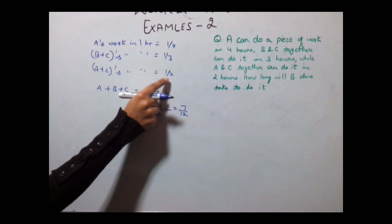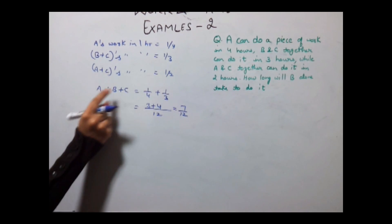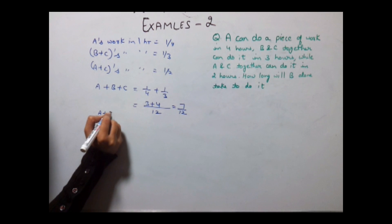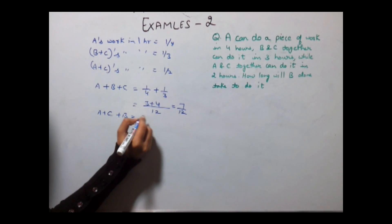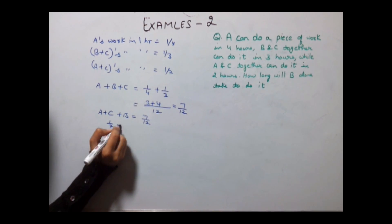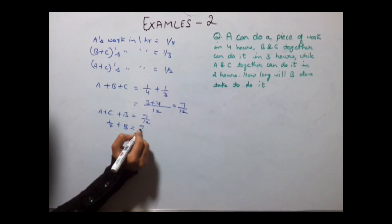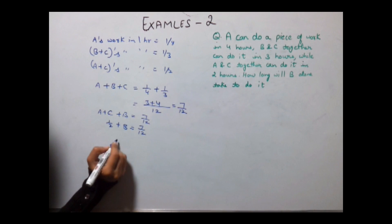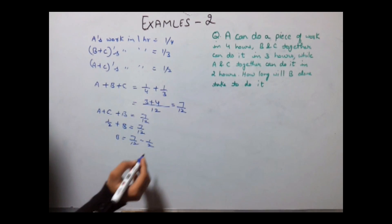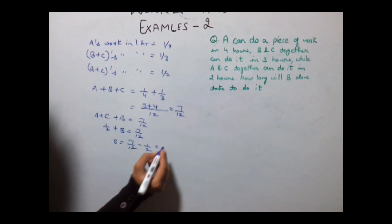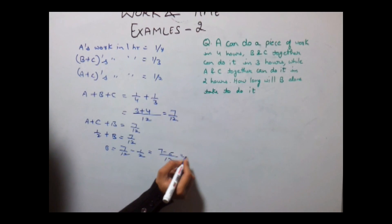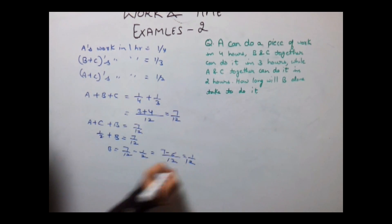We are given that A and C can do it in 1/2 hours. So putting value A plus C plus B is equal to 7/12. A and C can do it in 1/2 plus B is equal to 7/12. B can do it in 7/12 minus 1/2. Taking 12 as LCM, 7 minus 6 is 1/12.